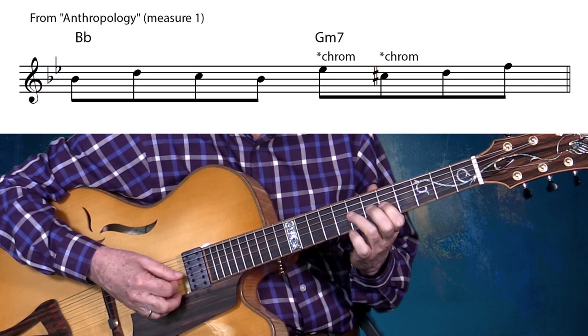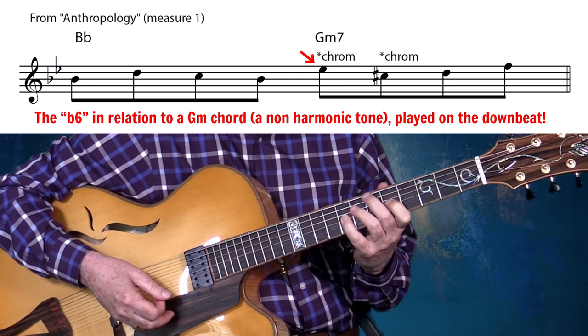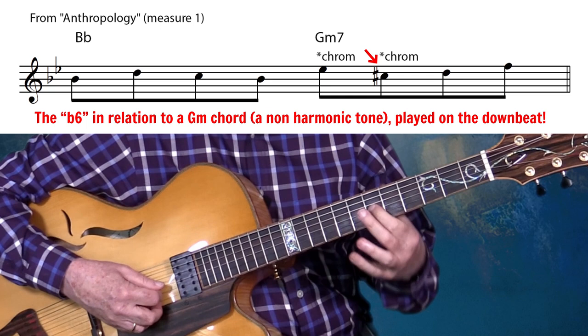The very first measure goes like this. Here we have a downbeat, then another downbeat — and that's an avoid note, that's the four. And immediately after that on the upbeat, he doesn't resolve it right away.